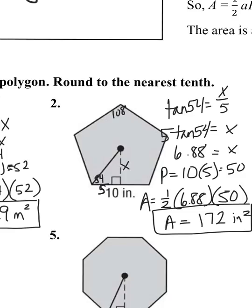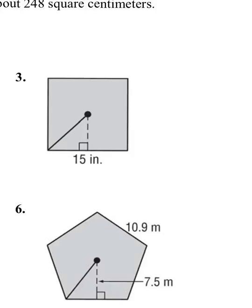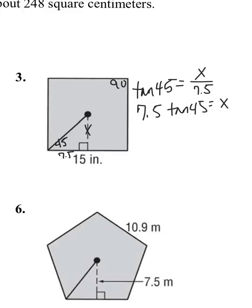So now we'll go on to question number 3. Here's our square. We know that each corner has 90. So when I cut that in half, this bottom corner has 45. This has 7.5 because it's half of 15. And I'm looking for the apothem. So the tangent of 45 equals X over 7.5. So 7.5 tangent of 45 equals my apothem. And I actually got 7.5.